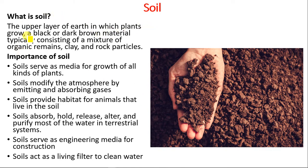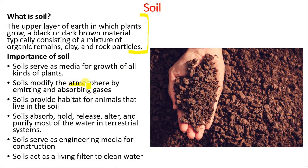What is soil? Soil is the upper layer of the earth in which plants grow — a black or dark brown material typically consisting of a mixture of organic remains, clay and rock particles. The importance of soil: first, soil serves as a medium for plant growth of all kinds of plants. Second, soil modifies the atmosphere by emitting and absorbing gases.